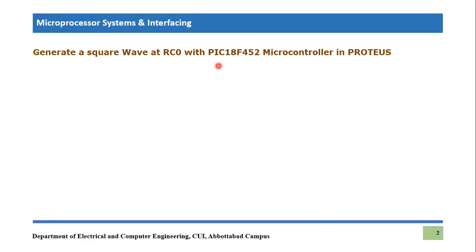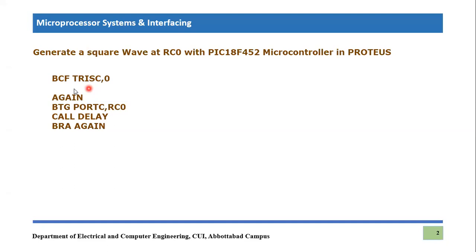So first of all let's write the code. This is the code that I have written for you, let me explain it — it's very easy and simple. We have seen it in multiple tutorials so I will go through it very quickly. BCF C,0 — this instruction is basically making the port C or RC0 pin as output pin, because we are clearing the corresponding TRIS register for this specific pin.